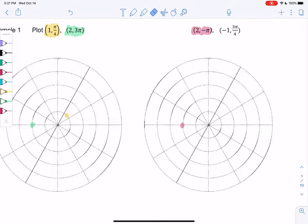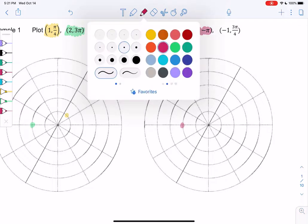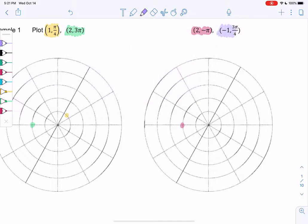Now let's check out those negative r's. For (-1, 3π/4), we go to 3π/4, which is right here. We're not going to go to 1. Instead, we're going to reflect across the origin. We go to this angle and reflect down here. That's how it works.